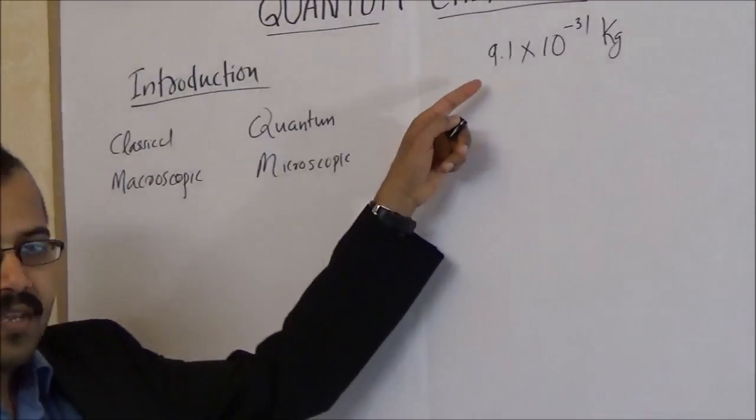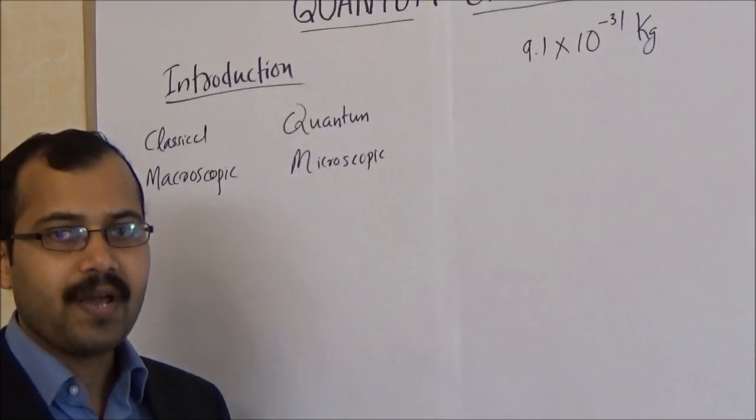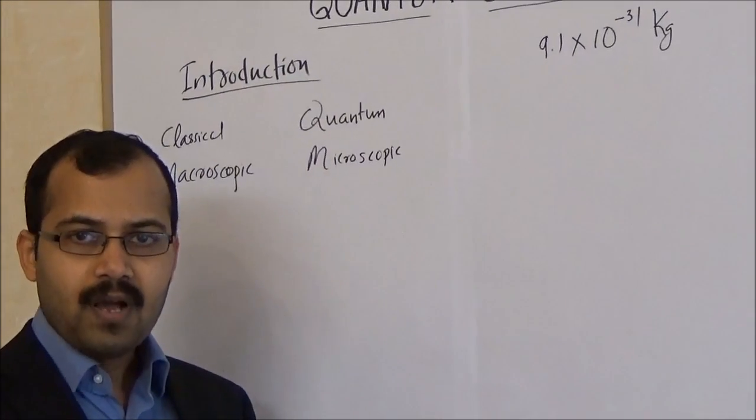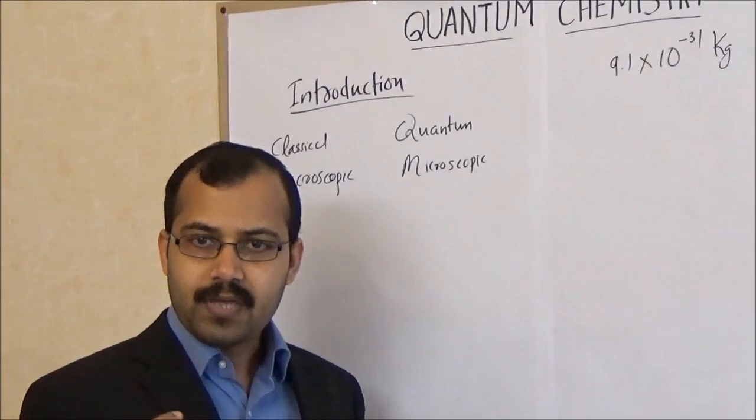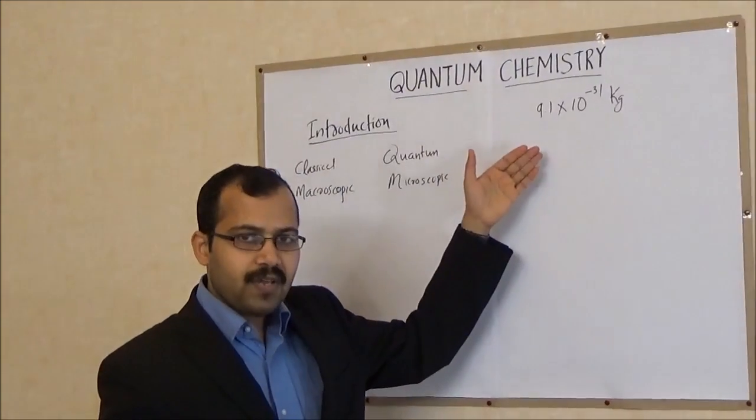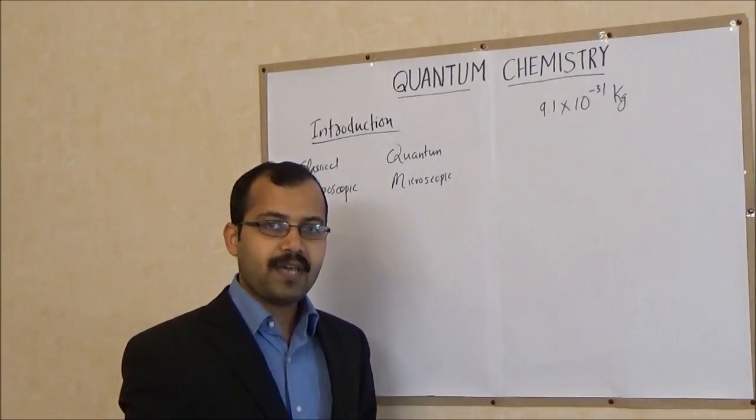How tiny is this mass? 9.1 times 10^-31 kilogram. We often say about 1 gram, 2 gram, 100 kilogram or 1 ton or even milligrams. But this is a number or mass that we are not familiar with. But to get a feeling of this, I will say an example.